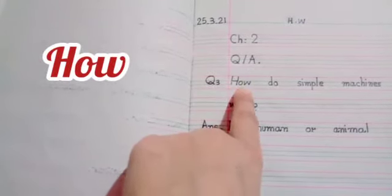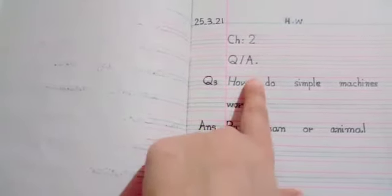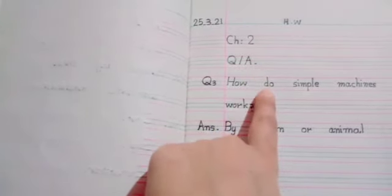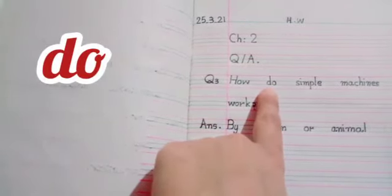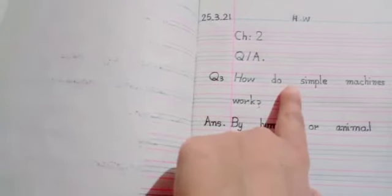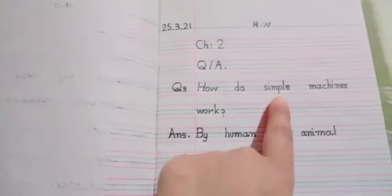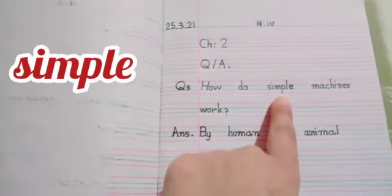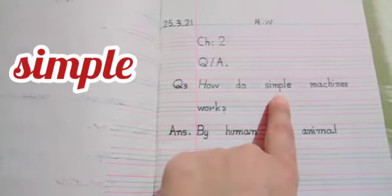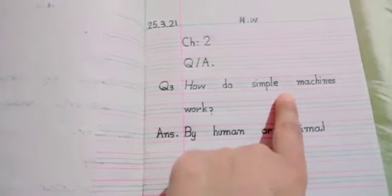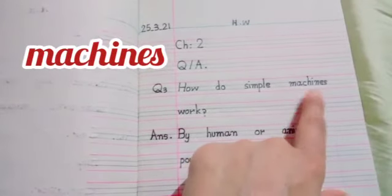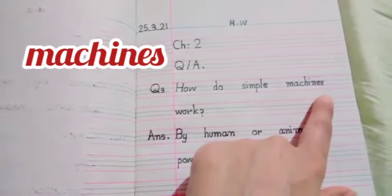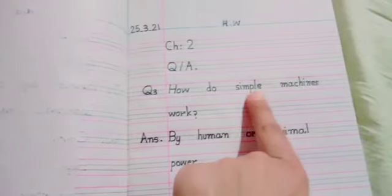Then put your finger, take one finger distance and write D-O do. How do. And again take one finger distance and write S-I-M-P-L-E simple. And again take one finger distance and write M-A-C-H-I-N-E-S machines.